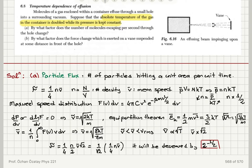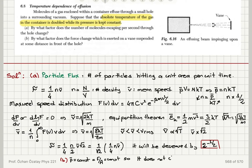For part B: by what factor does the force change which is exerted on a vane suspended at some distance in front of the hole? Since we have constant pressure, p̄ is constant, meaning force per area is constant. Therefore the force exerted on the vane does not change — this is a direct consequence of the constant pressure condition.